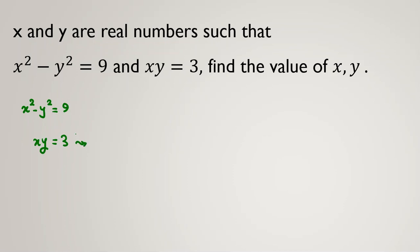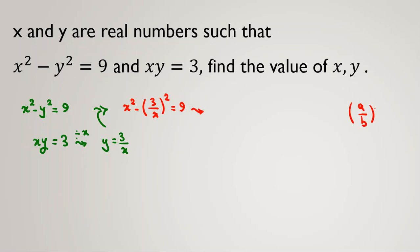We know x is not 0 because if it were, xy would be 0, not 3. So if we divide by x, we get y = 3/x. Substituting into the first equation: x squared minus (3/x) squared equals 9. By the power rule, (a/b)^m = a^m / b^m, so this becomes x squared minus 9 over x squared equals 9.